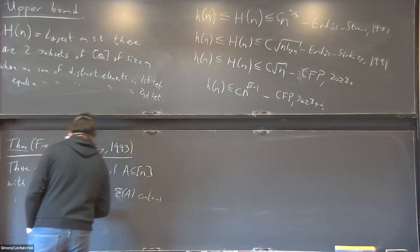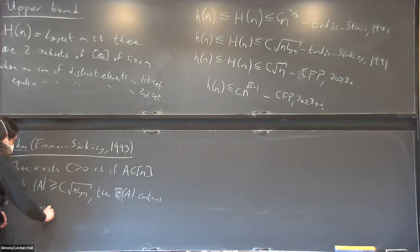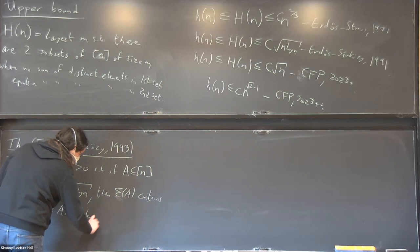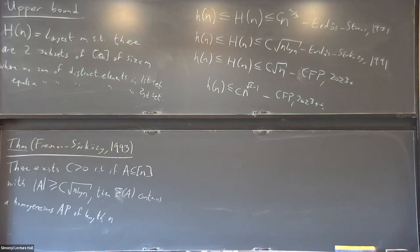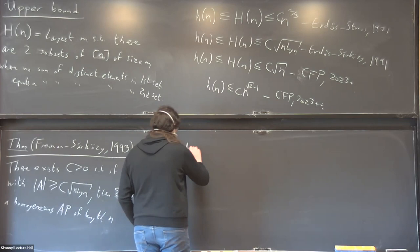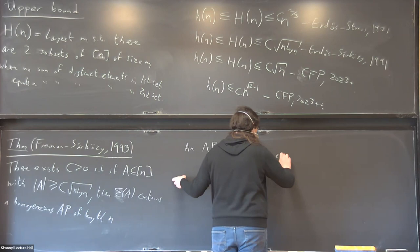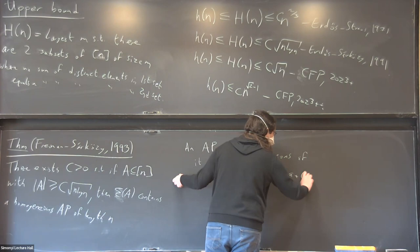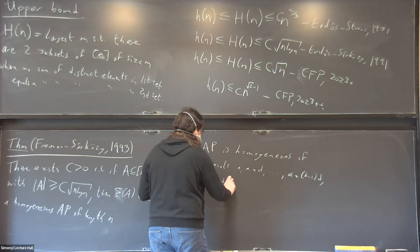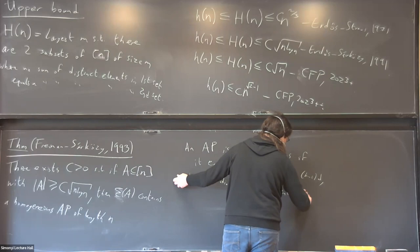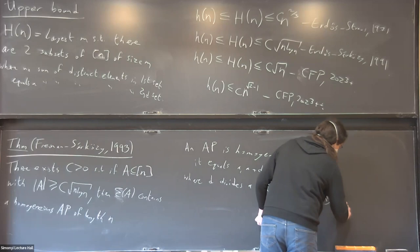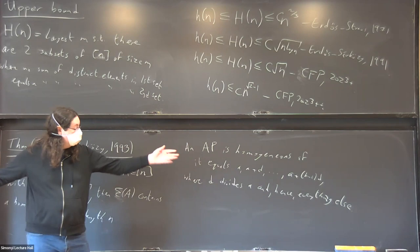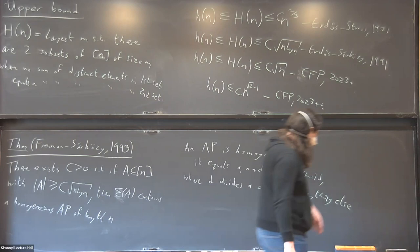The Freiman-Charcutley result says there exists some C such that if A is a subset of {1,...,N} with |A| ≥ C√(N log N), then A contains a homogeneous arithmetic progression in Σ(A). An AP is homogeneous if it equals {a, a+d, a+2d, ..., a+(k−1)d} where d divides a, and hence everything — so when you extend it to ±∞ it goes through zero.